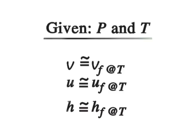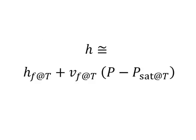This is because the compressed liquid properties depend on temperature much more strongly than they do on pressure. Of these properties, the property whose value is most sensitive to variations in pressure and temperature is the enthalpy H. Although the above approximation results in negligible error in V and U, the error in H may reach undesirable levels. However, the error in H at low to moderate pressures and temperatures can be reduced significantly by evaluating it as H approximately equals HF at a given temperature plus VF at a given temperature times (P minus P saturation at that temperature), instead of taking it to be just HF. Note, however, that this approximation does not yield any significant improvement at moderate to high temperatures and pressures, and it may even result in greater error due to overcorrection at very high temperatures and pressures.